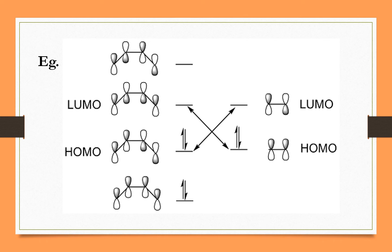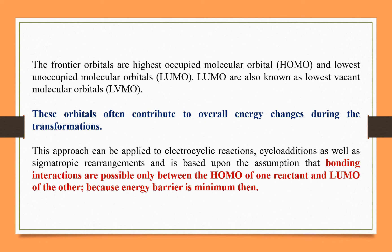The product of that reaction is cyclohexene. Although 1,3-butadiene has 4 orbitals, we will not consider all four of them. We will consider only HOMO and LUMO — just these two orbitals.